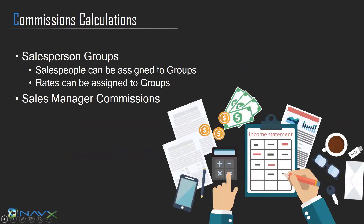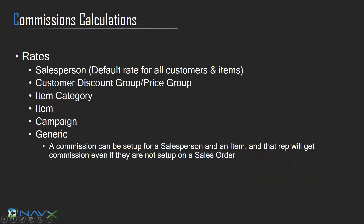Salespersons can be assigned into groups that can be set up. When you set those up, the rate can be set at the group level. So if you have special groups of reps — maybe in-house versus outside — you don't have to go into each individual rep to set up your commissions. The rates can also be set by individual rep.